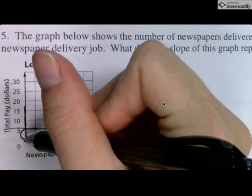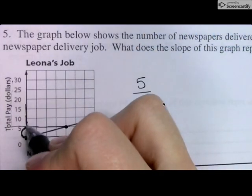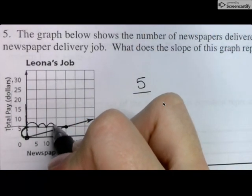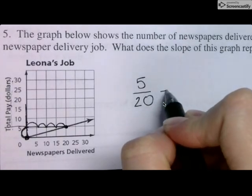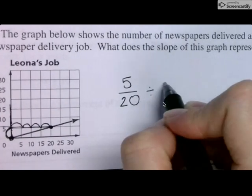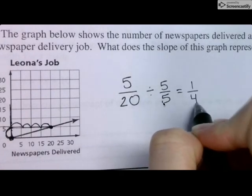So, I went up 5 and over 5, 10, 15, 20. I can divide both of those by what? 5 over 5, which gives me 1/4.